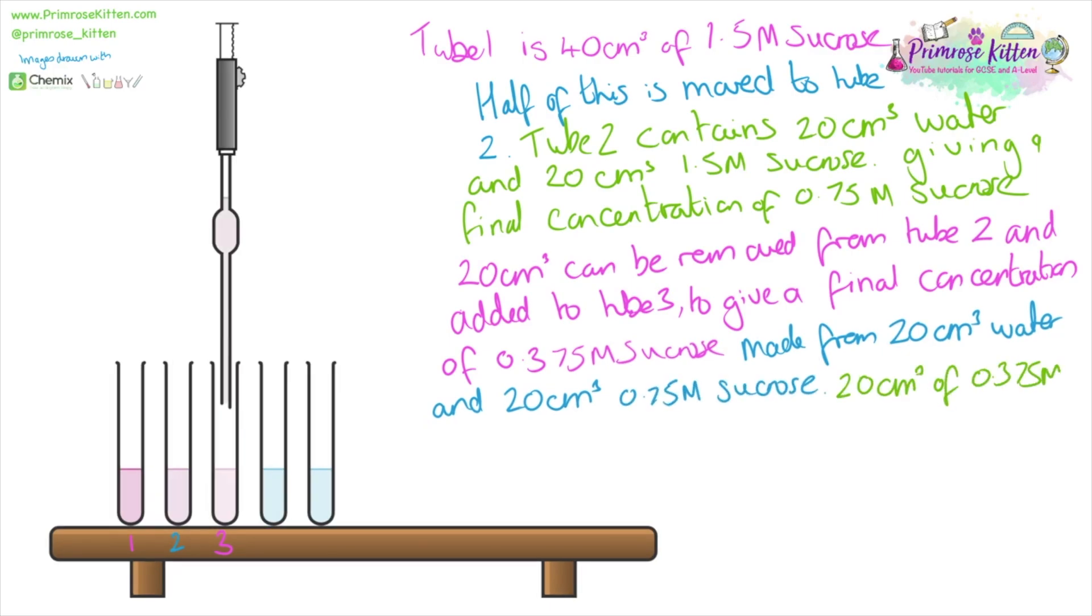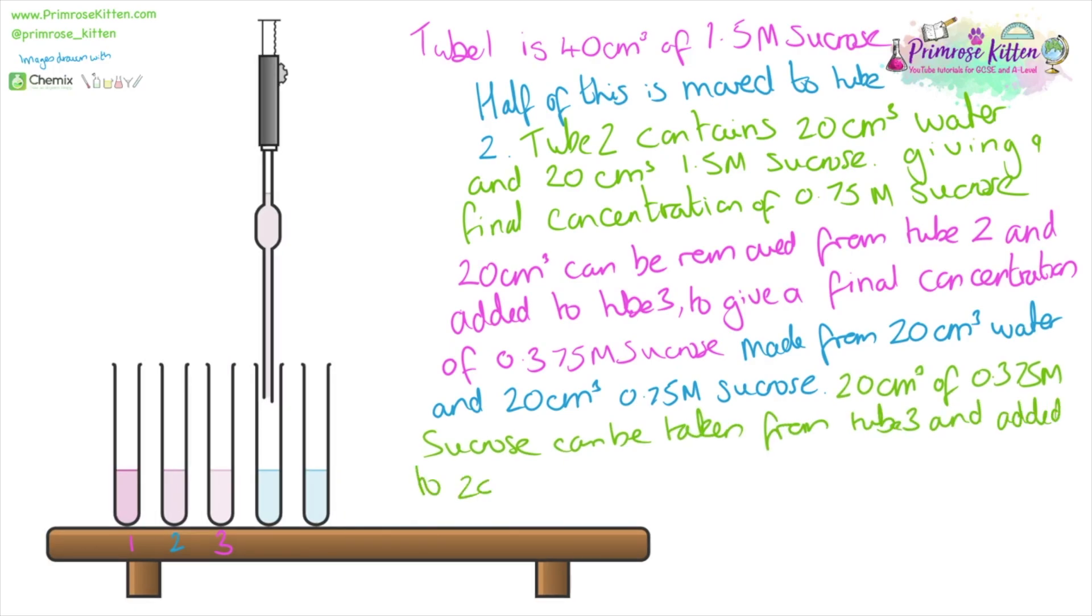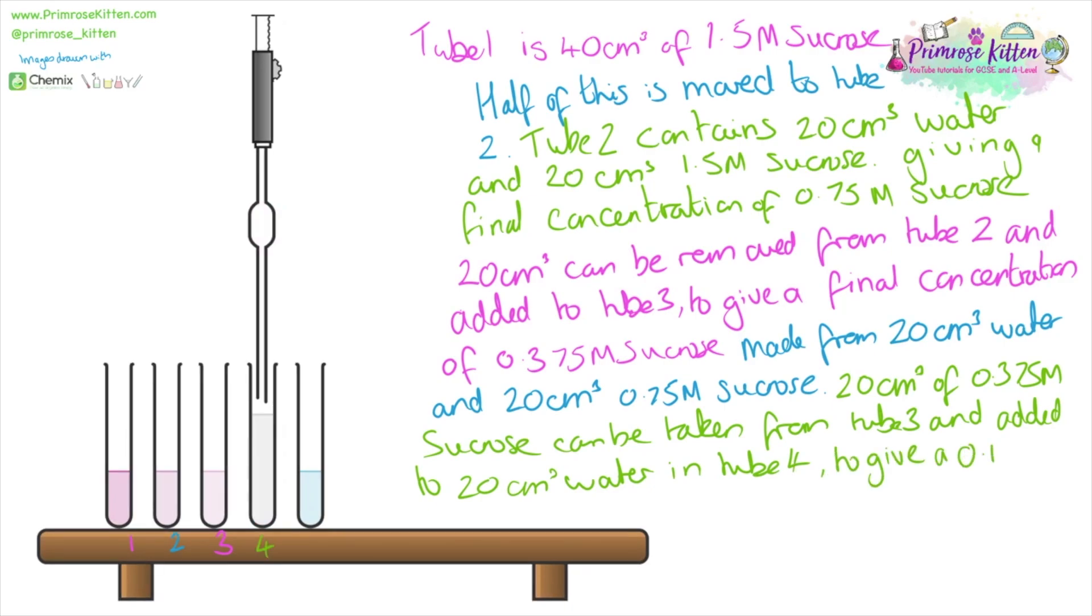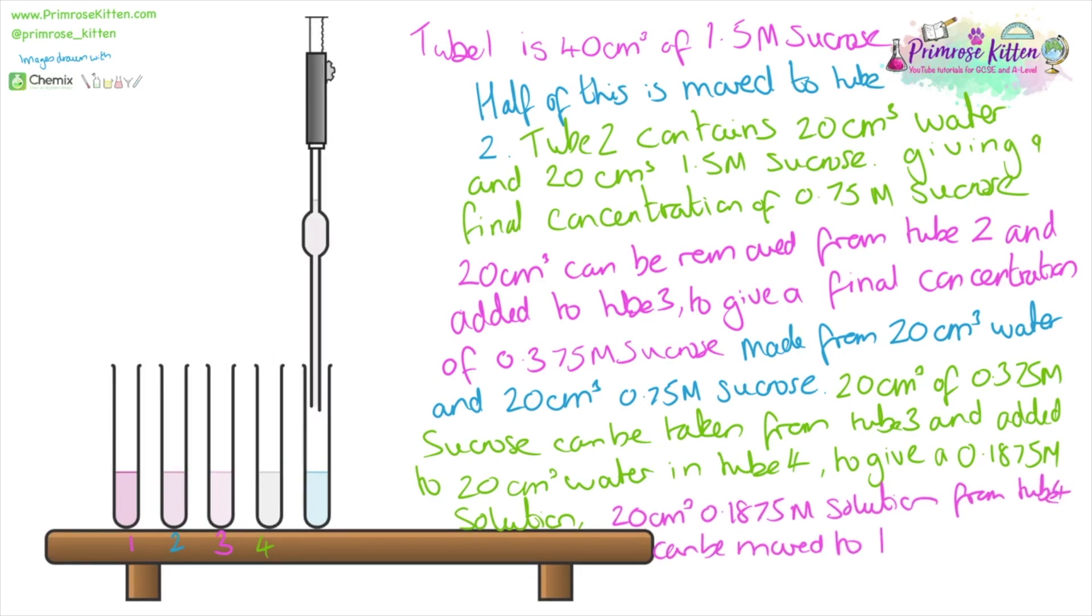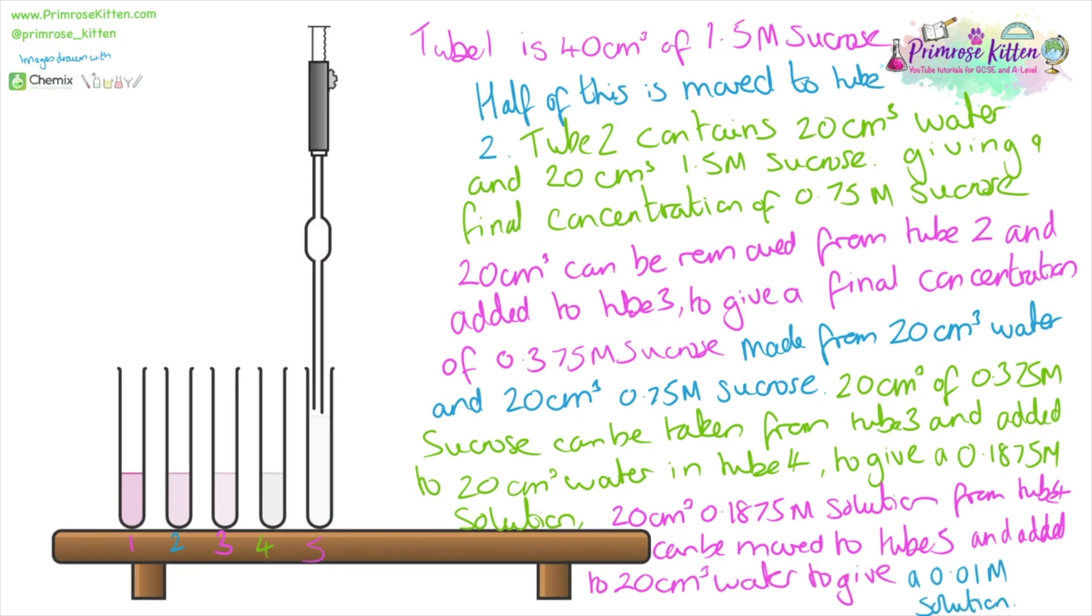20 cm³ of 0.357 molar sucrase can be removed from tube three. This can be added to tube four. Give a 0.1875 molar concentration of sucrase. Added to 20 cm³ of water. Give a final 0.01 molar solution.